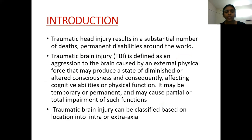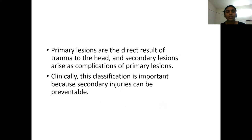It may be temporary or permanent and may cause partial or total impairment of such functions. Traumatic brain injury can be classified based on location into intra- and extra-axial. Primary lesions are the direct result of trauma to the head and secondary lesions arise as complications of primary lesions. Clinically, this classification is important because secondary injuries can be preventable.